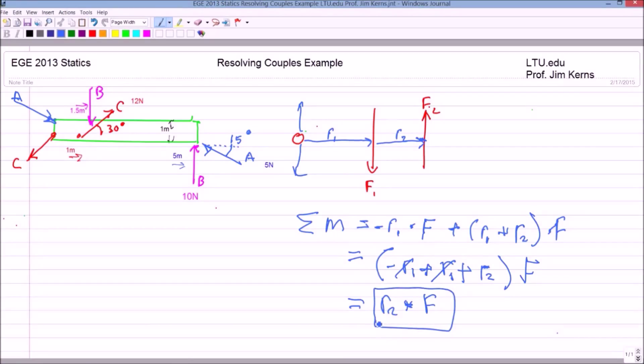The vector from F1 to F2 is our position vector times the magnitude of that couple, and that's it. It doesn't matter where I place the origin, it doesn't matter at what point I calculate that moment about.